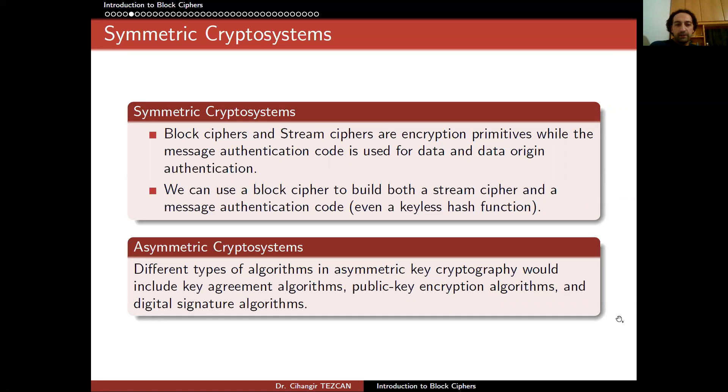Asymmetric cryptosystems are somewhat different because there are different types of algorithms involved. These algorithms include key agreement algorithms, public key encryption algorithms, and digital signature algorithms. And probably we will be talking about them in the last weeks of this lecture, of this course.